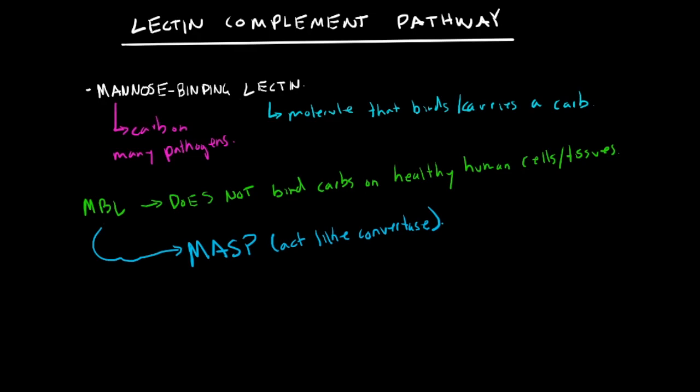So that is basically what happens here. Right now, we have this MASP, which then acts like a big pair of scissors and cuts C3 into C3A and C3B. Once again, we're interested in this.